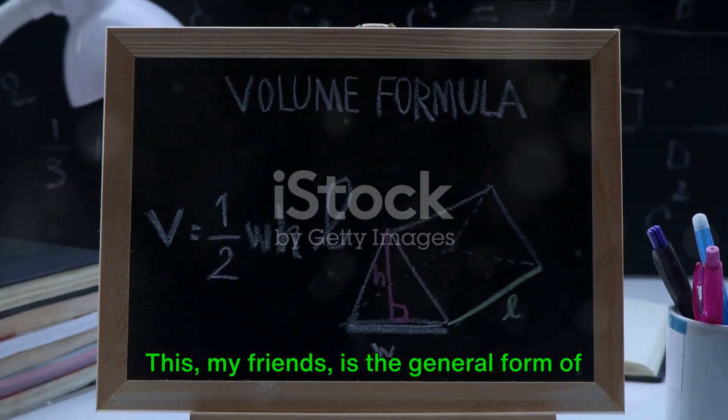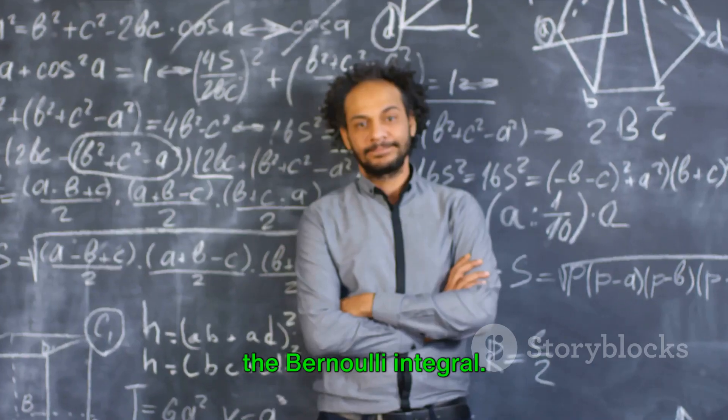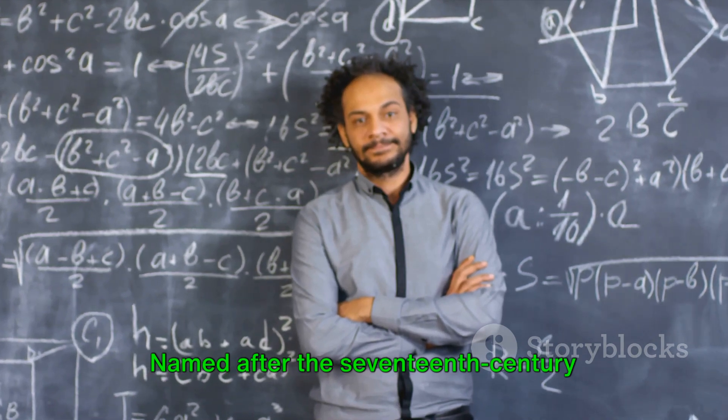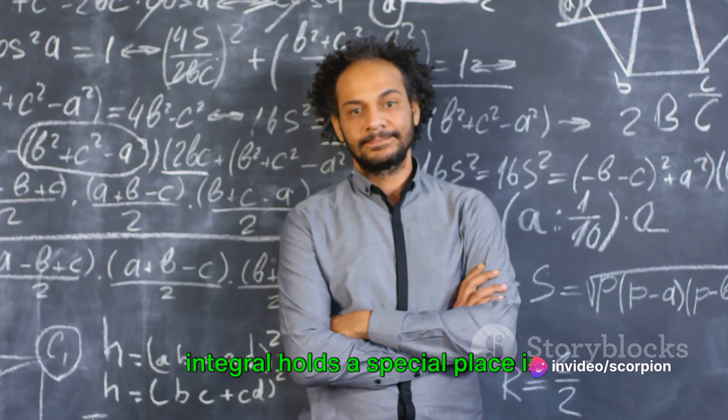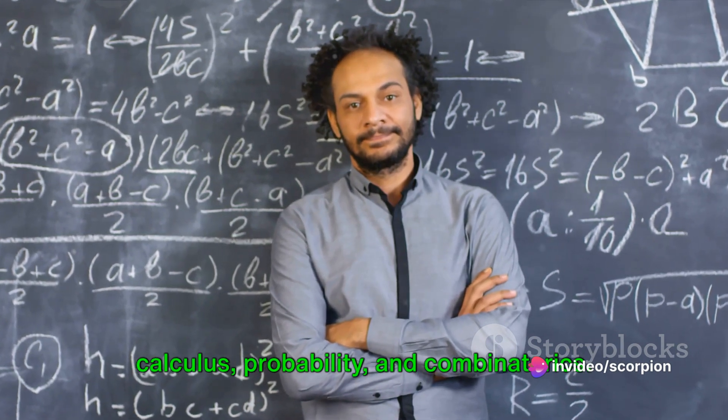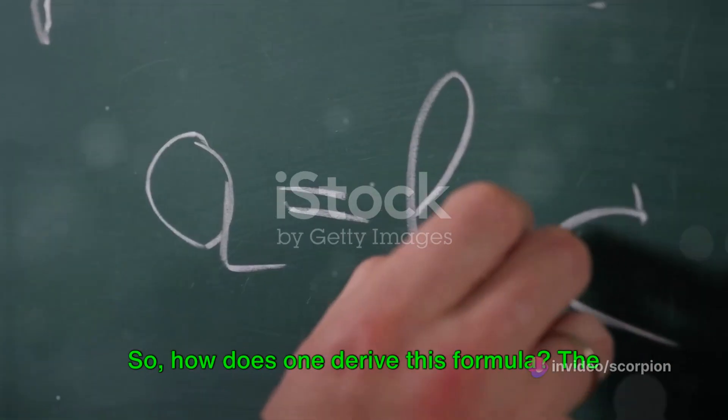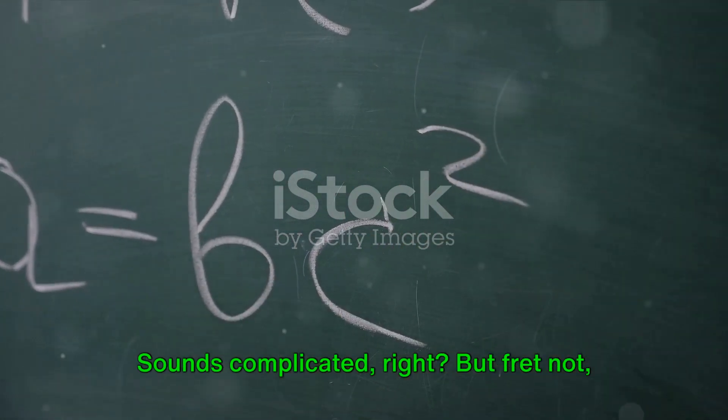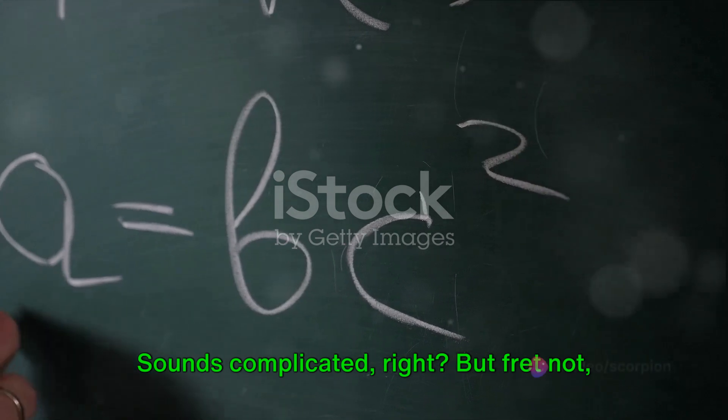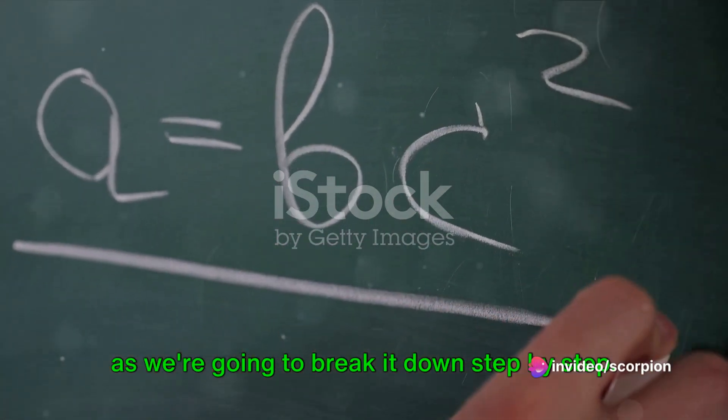This, my friends, is the general form of the Bernoulli integral, named after the 17th century mathematician Jacob Bernoulli. This integral holds a special place in calculus, probability, and combinatorics. So how does one derive this formula? The method is called integration by parts. Sounds complicated, right? But fret not, as we're going to break it down step by step.